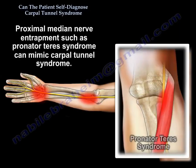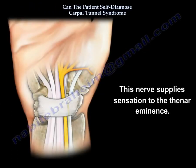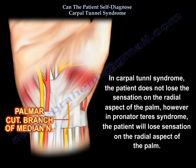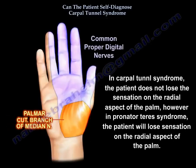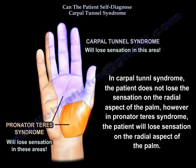Proximal median nerve entrapment such as pronator teres syndrome may also mimic carpal tunnel syndrome. In the case of pronator teres syndrome, the palmar cutaneous branch of the median nerve is also involved. This nerve supplies sensation to the thenar eminence. In carpal tunnel syndrome, the patient does not lose sensation on the radial aspect of the palm; however, the patient with pronator teres syndrome will lose sensation on the radial aspect of the palm.